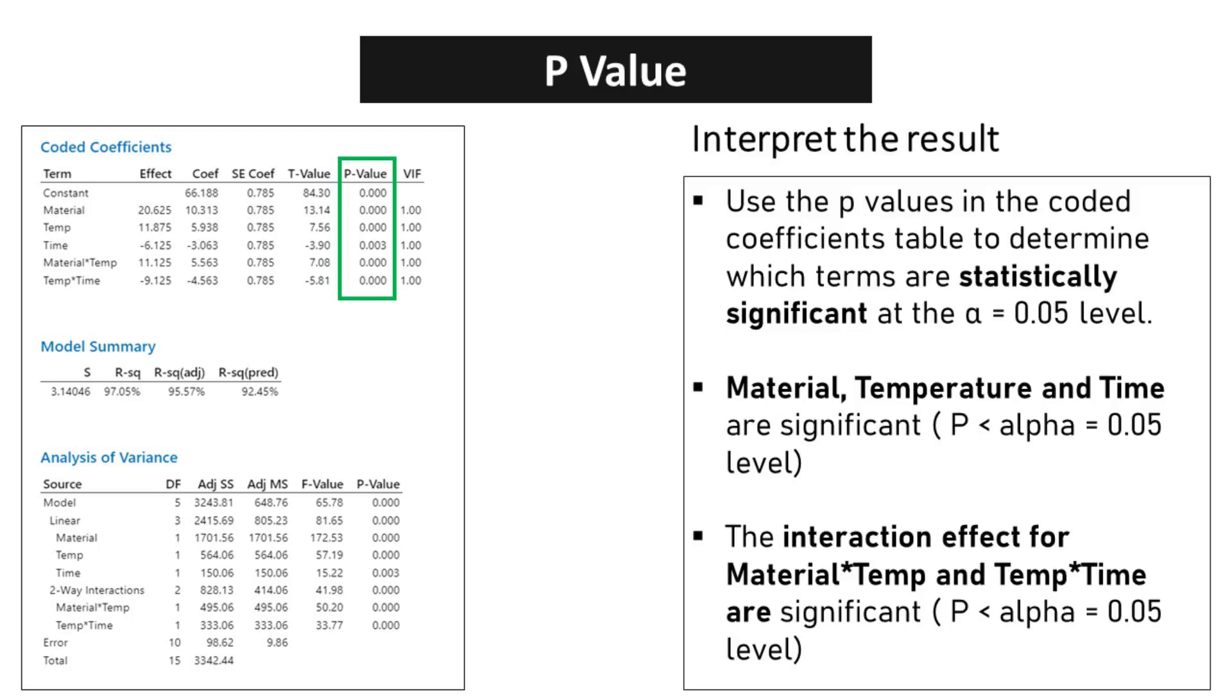Material, temperature, and time exhibit statistically significant effects, as their respective p-values are less than the specified alpha level. This indicates that changes in these factors have a significant impact on the response variable. Furthermore, the interaction effects between material and temperature and the interaction effect between temperature and time also demonstrate statistical significance at the alpha equals 0.05 level.